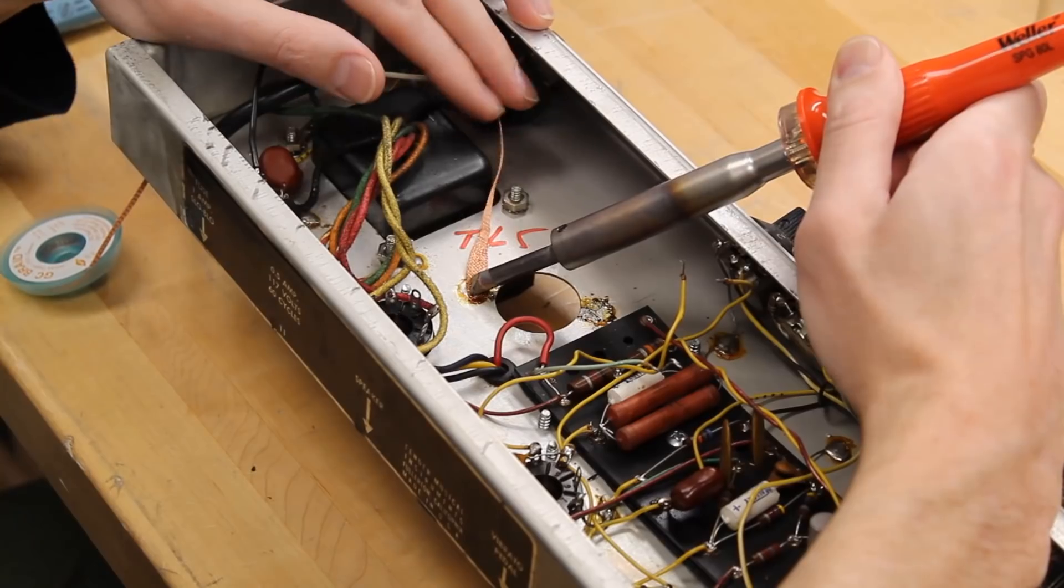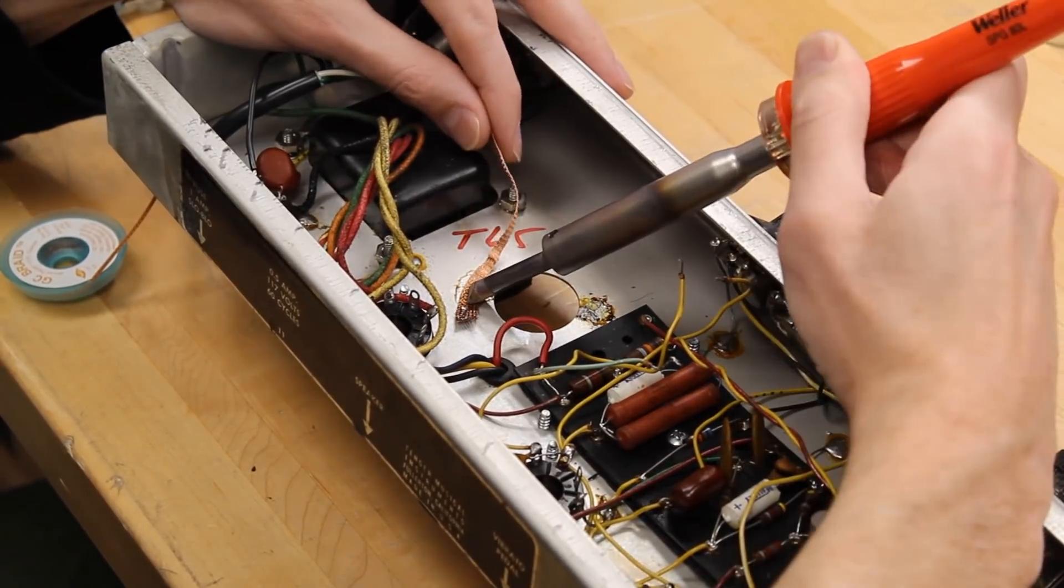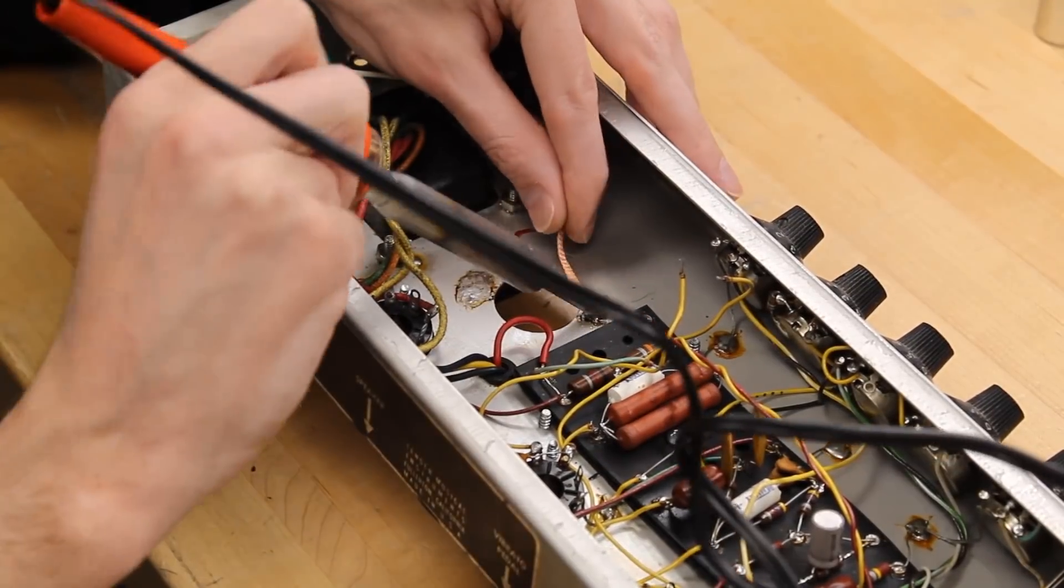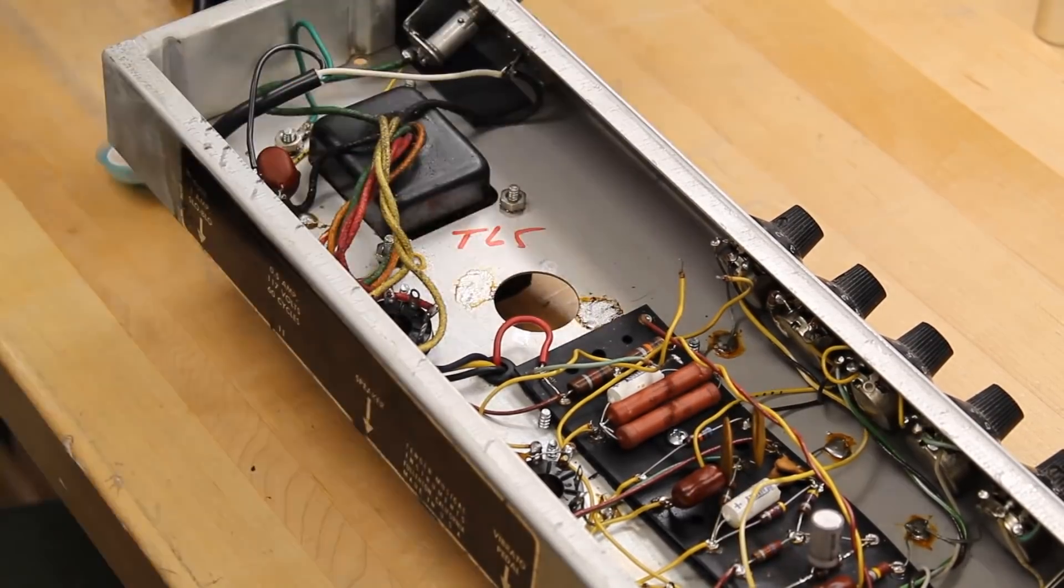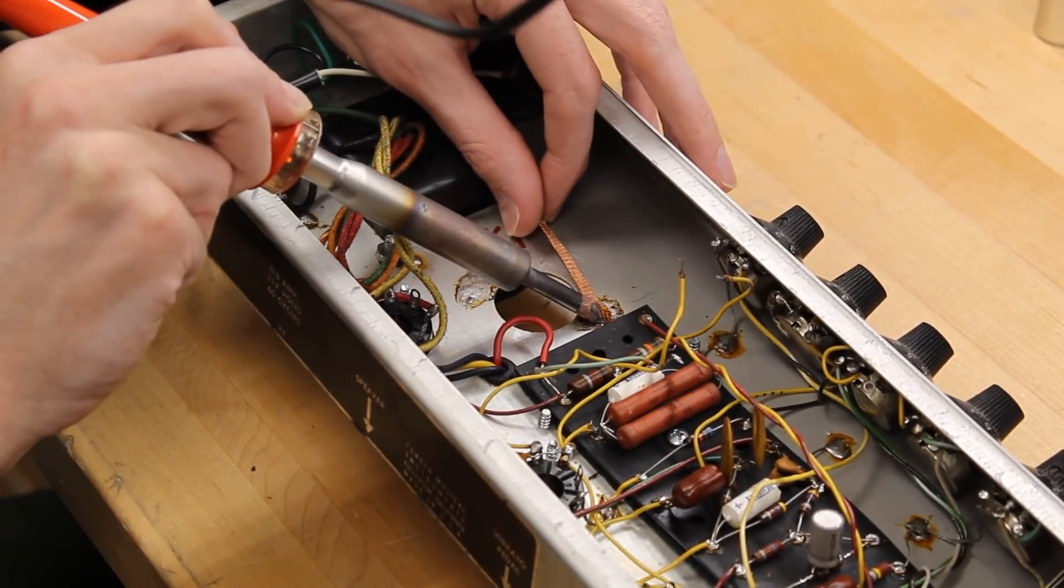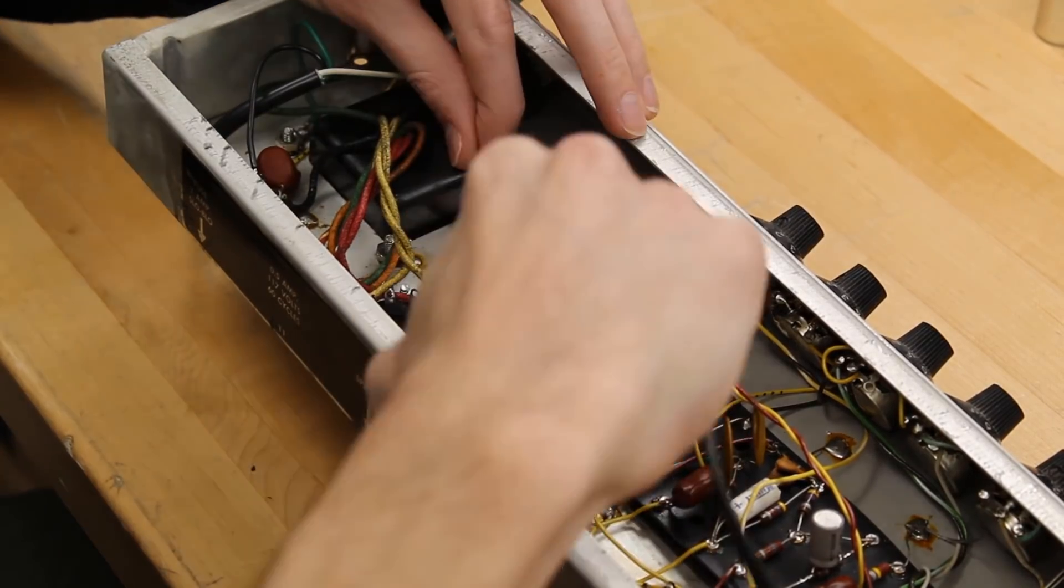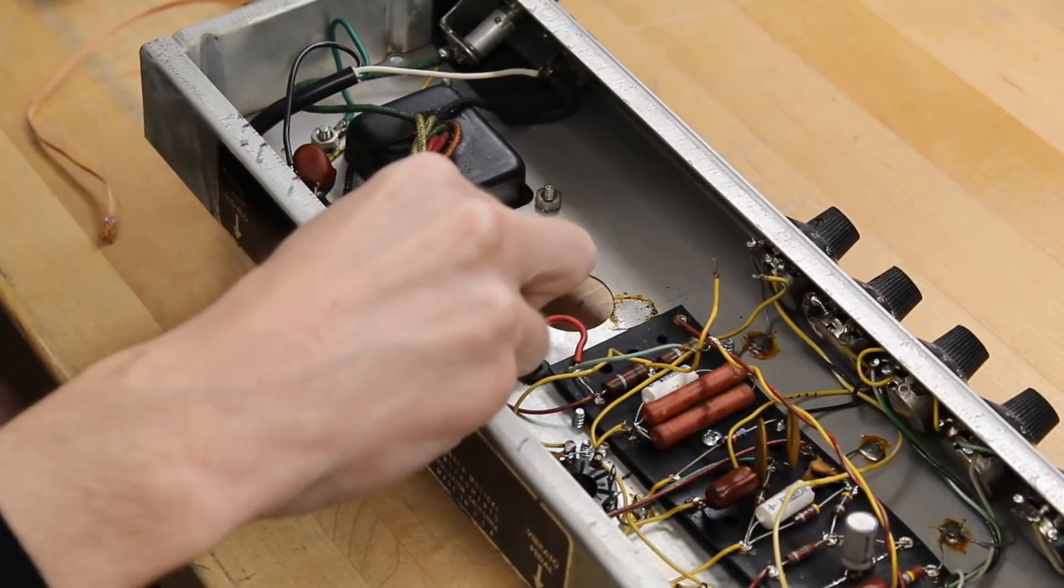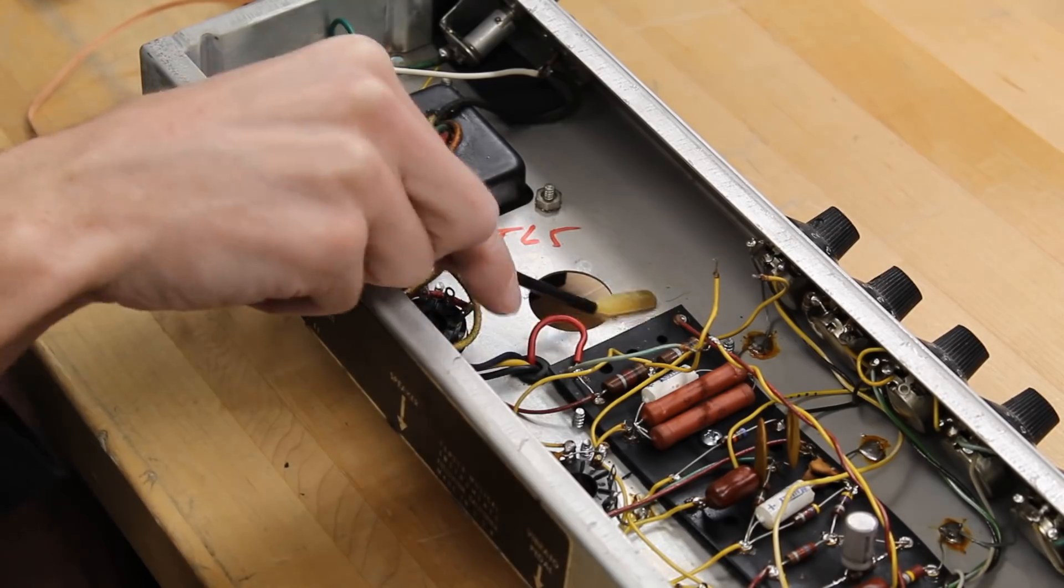Once the cap is out, we will go back through with the braid to remove any excess solder. We use some flux wash to remove the old flux.